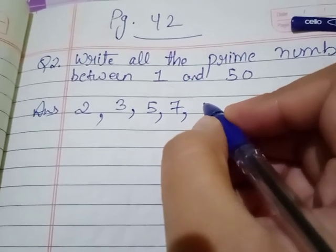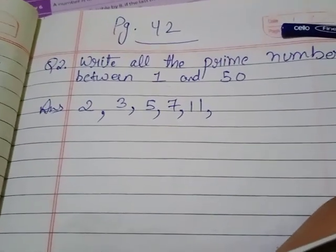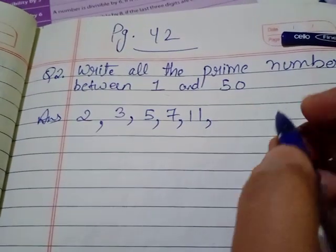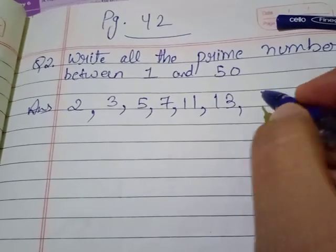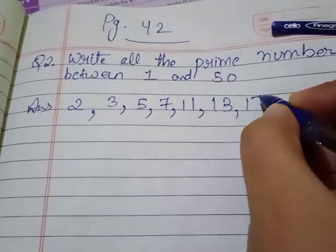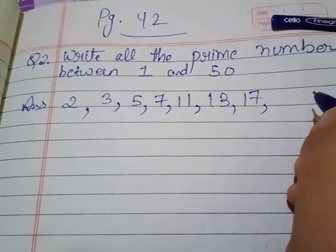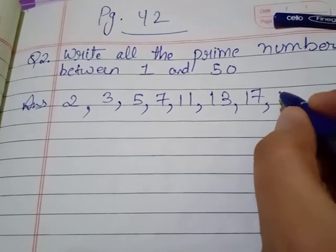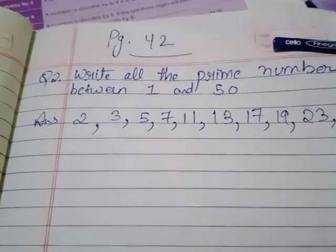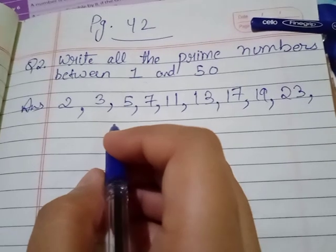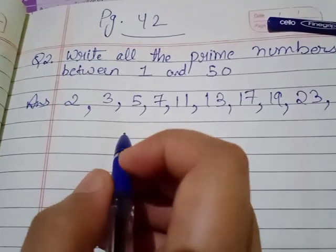Then we have 11 — it is divisible only by 1 and itself, so 11 is prime. What about 12? No. Then 13 is prime. 14 is not, because 2 and 7 divide it. 15 is not prime. 16 is not prime. 17 we will write as prime. 18 is not — it is an even number coming in the table of 2. 19 is prime. Then 23 is prime. 24 and 25 are not. 26 is also not.